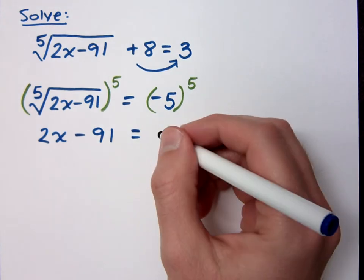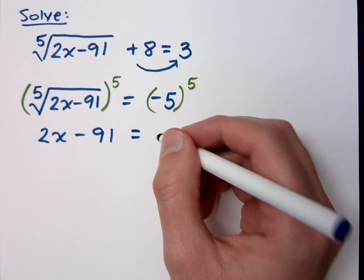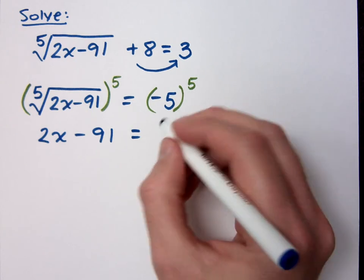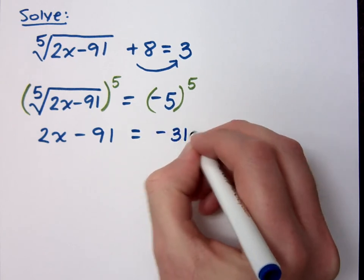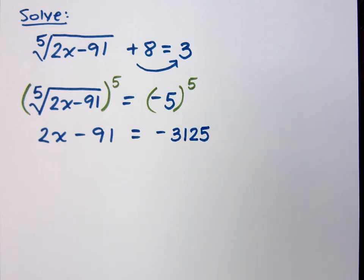Negative what? This is not 5 to the 3rd. This is 5 to the 5th power, right? Negative 3,125. You didn't hear me say 3 before, I said 125. I totally did. Thank you.